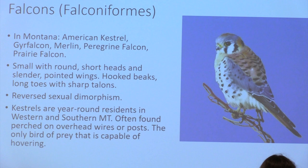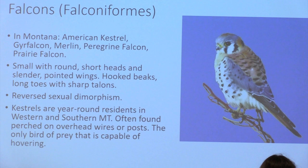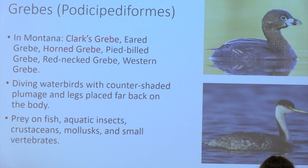Montana has several grebe species, including the pied-billed grebe and the western grebe. They are diving water birds with counter-shaded plumage. Their legs are placed far back on the body, indicating they are powerful divers — though this placement decreases their maneuverability on land. It's a classic evolutionary give-and-take.